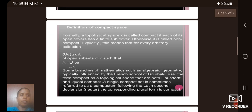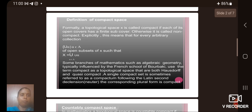Now let me see the definition of a compact space. Formally, a topological space X is called compact if each of its open covers has a finite subcover. Otherwise, it is called non-compact. Explicitly, this means that for every arbitrary collection U_α, α belongs to A, of open subsets of X such that X equals union of U_α.